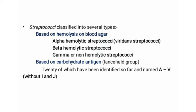Based on hemolysis, streptococci are classified into three varieties: alpha hemolytic, beta hemolytic, and gamma hemolytic. Another classification is based on carbohydrate antigen. Hemolytic streptococci were classified by scientist Lancefield in 1933 into 20 serological groups based on the nature of carbohydrate antigen present in the cell wall.